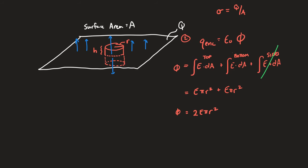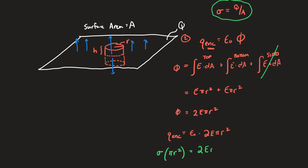Since the electric field points away from the sheet, the dot product for the flux is in the same direction on both top and bottom — it exits through both faces. That gives us a total flux of 2Eπr². Plugging back into Gauss's law: Q_enclosed = ε₀ · 2Eπr². The enclosed charge equals σ · πr², so σπr² = 2Eε₀πr². Canceling πr² gives us E = σ / (2ε₀), or equivalently Q / (2ε₀A).